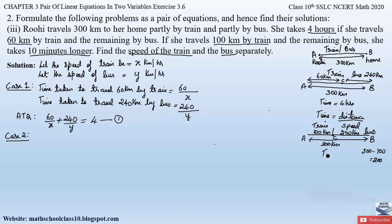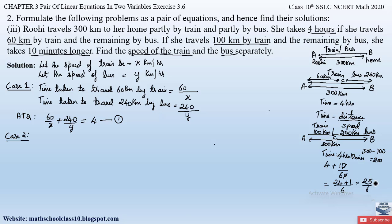The total time in case 2 is 10 minutes longer than 4 hours, so 4 hours and 10 minutes altogether. Since speed is in kilometers per hour, we convert 10 minutes to hours by dividing by 60, giving 1/6 hours. Taking LCM, 4 + 1/6 = 25/6 hours.